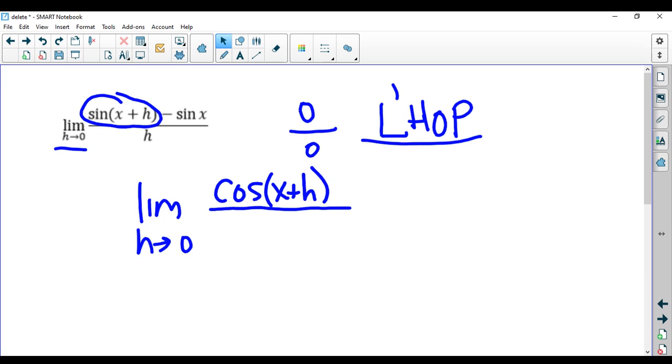And then times the derivative of the inside, which is the derivative of x plus h. The derivative of x is zero, because it's a constant. And the derivative of h is one.